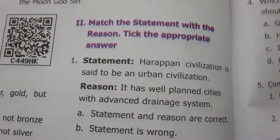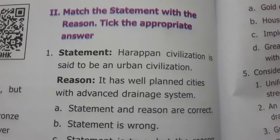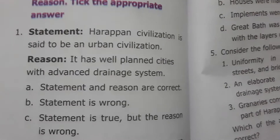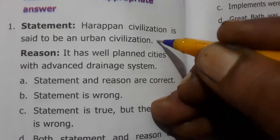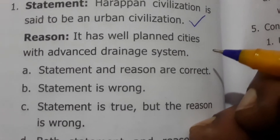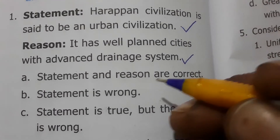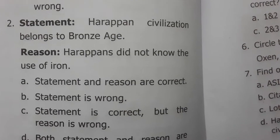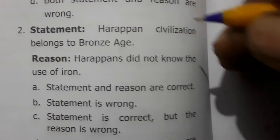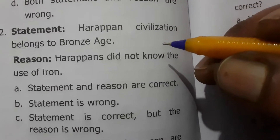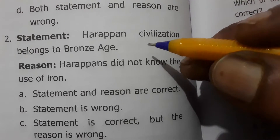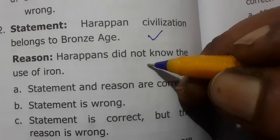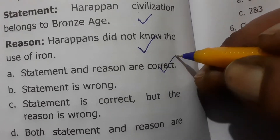Match the statements with reasons. Statement: Harappan civilization is an urban civilization - this is correct. Reason: It has well-planned cities with an advanced drainage system - correct. So statement and reason are correct. Second: Harappan civilization belongs to the Bronze Age because this is the age at which humans first used bronze metal - correct statement. Harappans did not know the usage of iron - also correct. Statement and reason are correct.